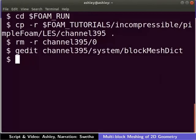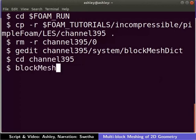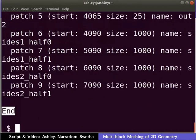We have now finished labeling. Come to the terminal and type cd base channel 395. To mesh the geometry, type blockMesh and press Enter. The meshing is now complete.